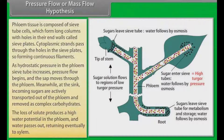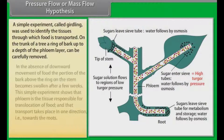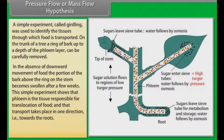A simple experiment called girdling was carried out to identify the tissues through which food is transported. On the trunk of a tree, a ring of bark up to a depth of the phloem layer can be carefully removed. In the absence of downward movement of food, the portion of the bark above the ring on the stem becomes swollen after a few weeks. This simple experiment shows that phloem is the tissue responsible for translocation of food and that transport takes place in one direction, which means towards the roots.